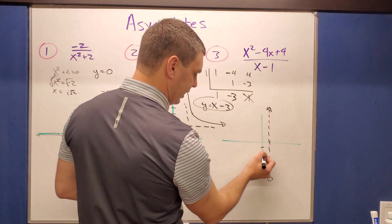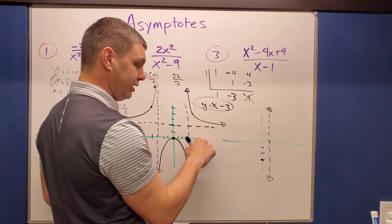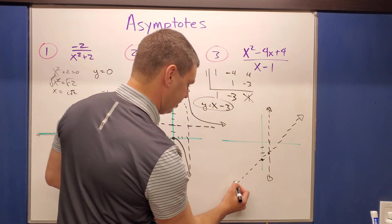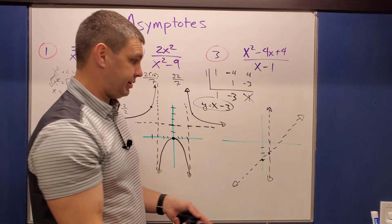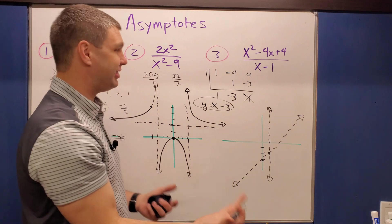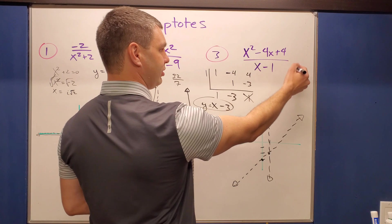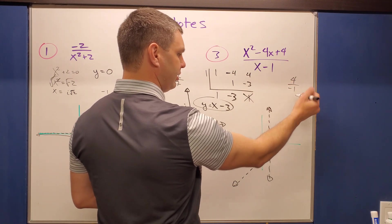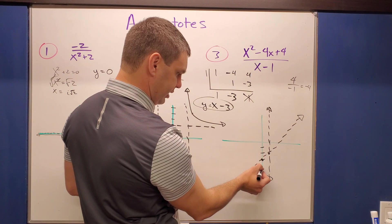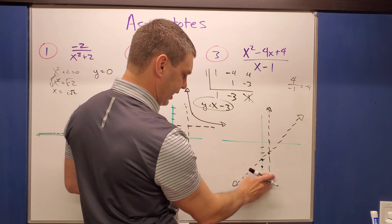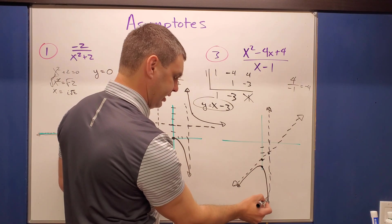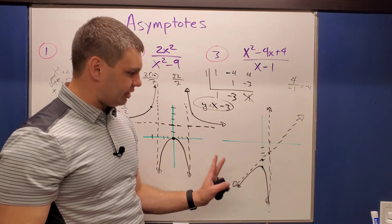To graph y equals x minus three, start at negative three on the y-axis with a slope of one — go up one, over one. Draw a dotted line through those points. This creates four regions. Using x equals zero as a test point: the numerator gives four, and the denominator gives zero minus one equals negative one. So at x equals zero, y equals negative four.